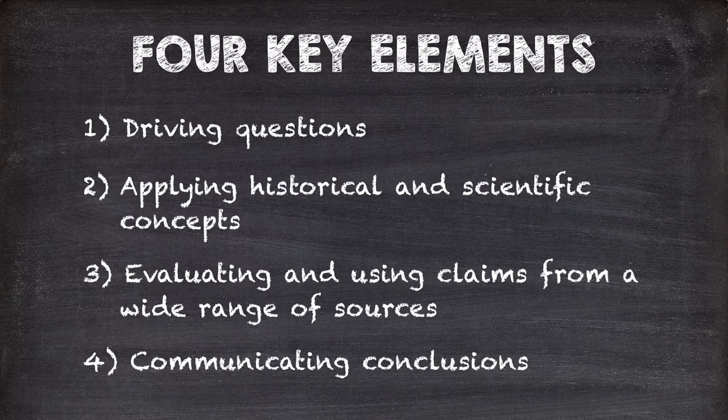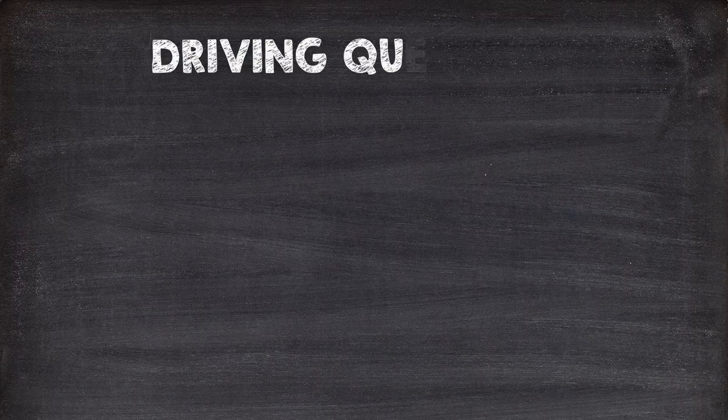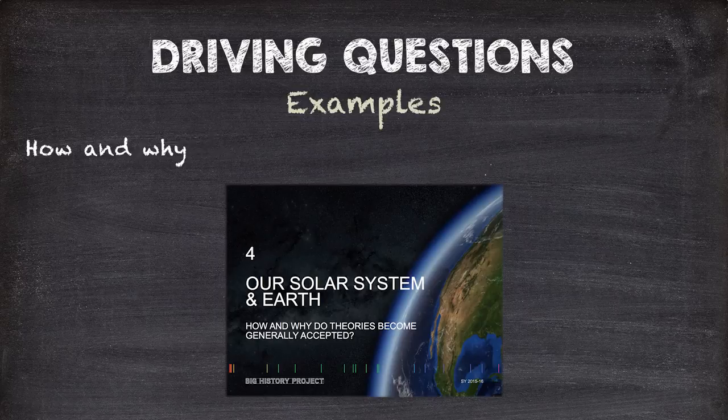Each unit of the Big History Project starts with a driving question. Questions like: why do we look at things from far away and up close? How and why do theories become generally accepted? What are the positive and negative impacts of interconnection?